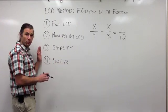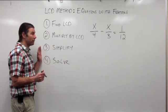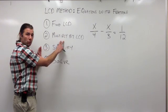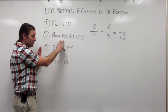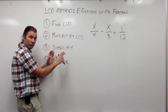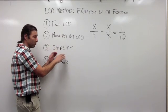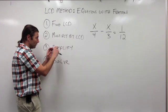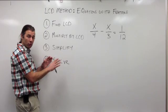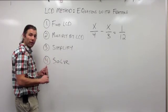Here are the steps that we use when we're using the LCD method. Step 1, we're going to find the LCD. Step 2, we're going to multiply by the LCD. Step 3, we're going to simplify. And at this point, when we simplify all the fractions in our problem, they're all going to drop out of every term, and then we'll be left with a regular equation like we're used to solving, and then we'll go ahead and solve that equation.